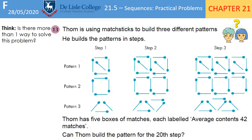Here's a real higher-level problem-solving question. Tom is using matchsticks to build three different patterns in steps. He has 5 boxes of matches, each labelled 'average contents 43 matches'. Can he build the pattern for the 20th step? First, work out the nth term rule. Pause the video and see if you can solve the whole problem. Some of you may have found the nth term for each separate pattern — that gets the same answer but is more work, so I'll show you a quicker way.